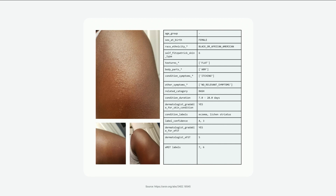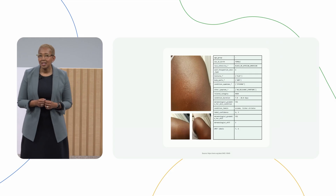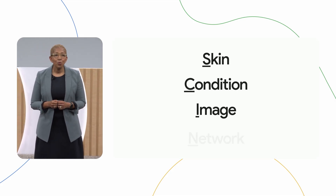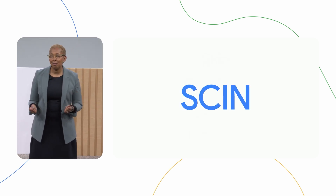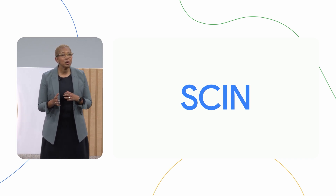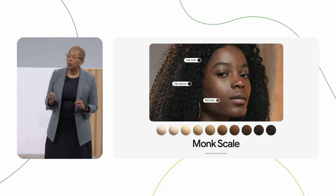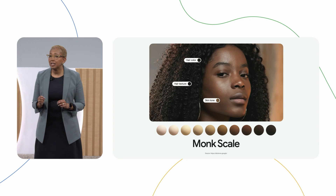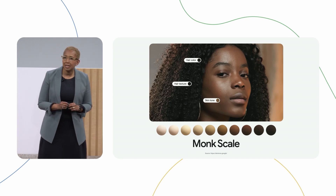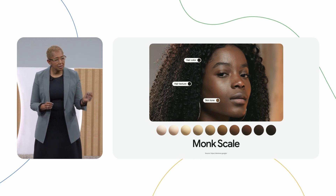So we set out to develop a data set inclusive of skin tones from a diverse group of people, representing different levels of condition severity, skin tones, ages, genders, and more. Today, with Stanford Medicine, we're releasing the Skin Condition Image Network, or SKIN data set, available to everyone. Thousands of people contributed photos to help build an open access data set with over 10,000 images of skin, nail, and hair concerns. Dermatologists then labeled these de-identified images with a possible diagnosis, and rated them based on two skin tone scales, to make sure the data set includes an expansive collection of conditions and skin types.